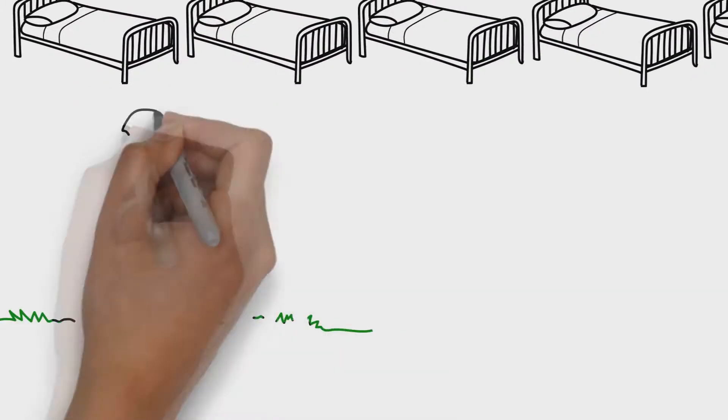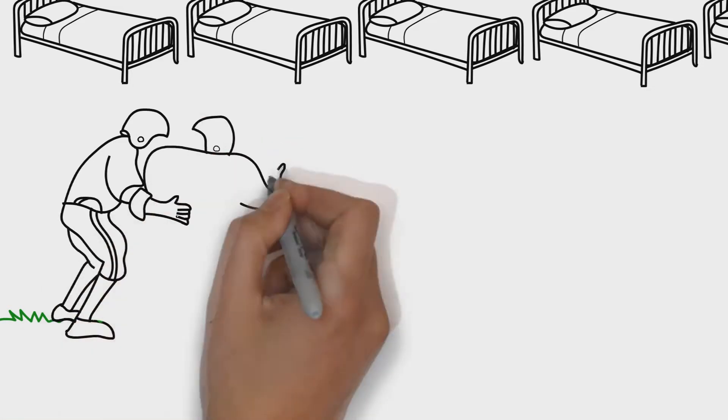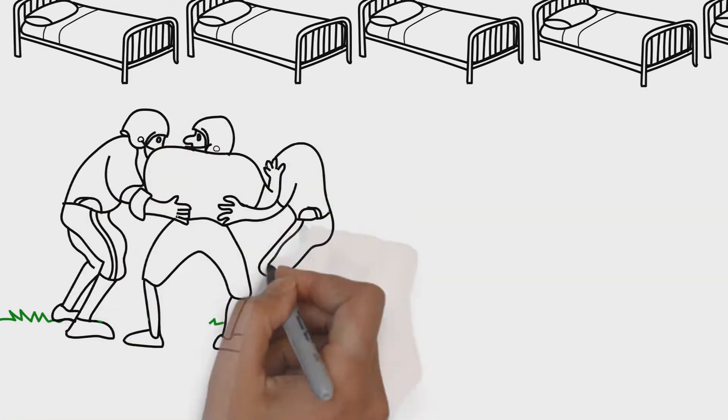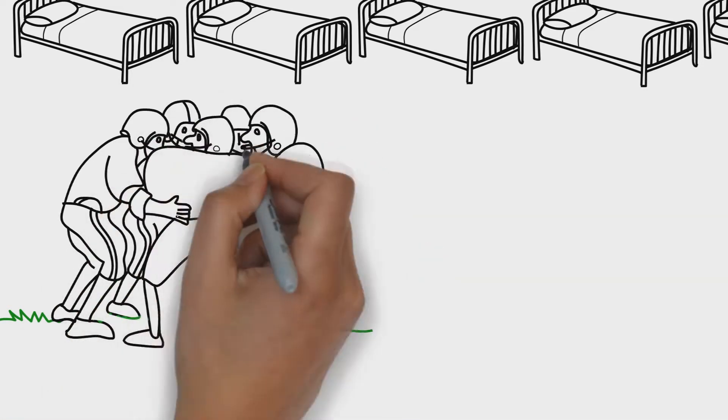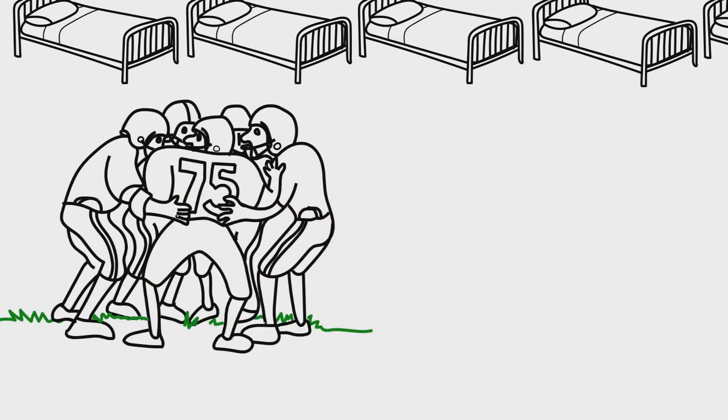To manage patient flow more effectively, healthcare workers are huddling first thing in the morning to estimate which patients will be discharged that day. The idea isn't to hurry people out. It's to take stock of where people are in the course of their treatment as a way to manage patient flow.